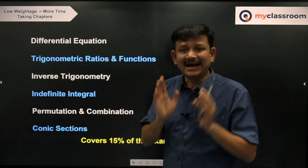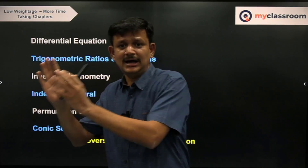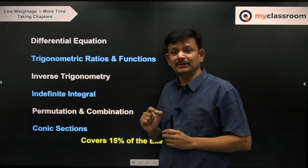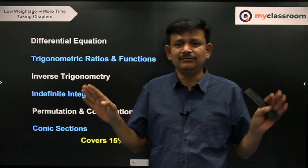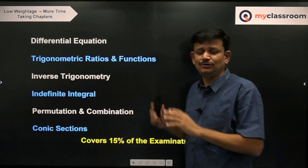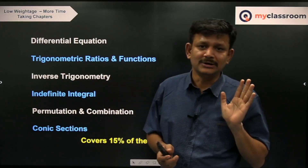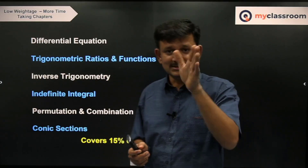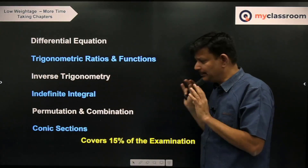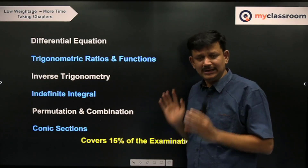For Parabola, focus only up to tangent, properties of focal chord, standard equation, tangent, and standard properties. The standard normal equation y = mx − 2am − am³ will suffice. For Ellipse, do not do a lot of theory — stick to the standard equation, tangents, normal equation, and the property SA + S'A = 2a where S and S' are foci. For Hyperbola, asymptotes and rectangular hyperbola are very important — go through them towards the end of your preparation.